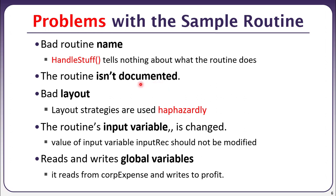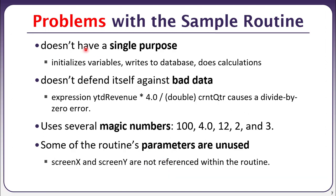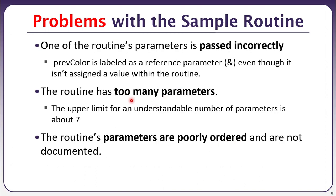To summarize the problems found: bad routine name, missing documentation, poor layout, input variables changed inside the method body, reading and writing from global variables, not having a single purpose, not protecting against bad data or doing exception handling, using magic numbers without explanation, having unused parameters, and passing too many or incorrectly ordered parameters. These are generic guidelines applicable to all methods you write in the future.